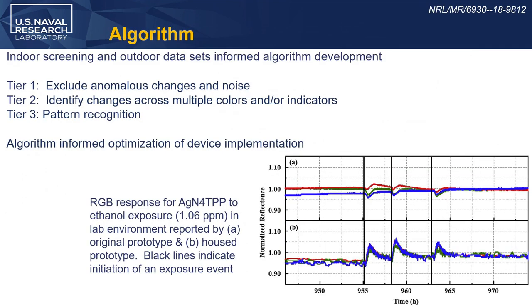The algorithm was intended to have three tiers, and we have the first two tiers automated. The third tier — pattern recognition for target identification — we're still working on. The first tier basically excludes electronic noise, such as a one-point spike or a one-color spike on one device. The algorithm considers each of the six indicators and each color sensor independently, but it does not treat red, green, and blue on a color sensor as independent results.